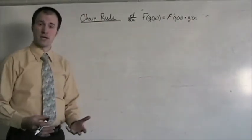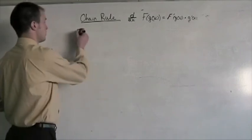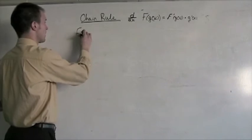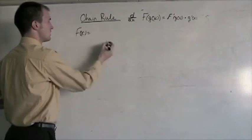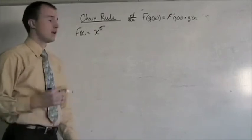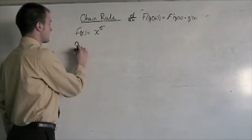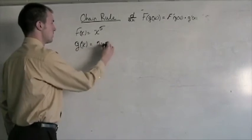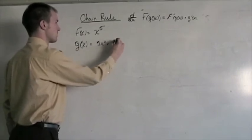Maybe the simplest way for me to explain this to you is for us to look at a composition. So, let's say that f of x is equal to x to the fifth power. And let's say that g of x is equal to 5x squared plus 3x.